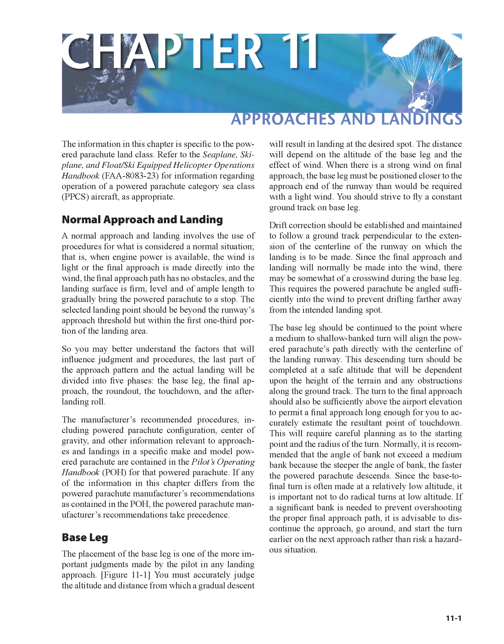Normally, it is recommended that the angle of bank not exceed a medium bank because the steeper the angle of bank, the faster the powered parachute descends. Since the base-to-final turn is often made at a relatively low altitude, it is important not to make radical turns at low altitude. If a significant bank is needed to prevent overshooting the proper final approach path, it is advisable to discontinue the approach, go around, and start the turn earlier on the next approach rather than risk a hazardous situation.